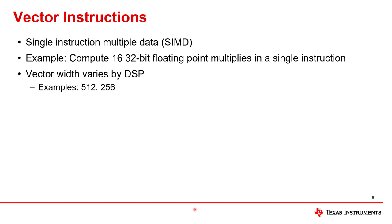Vector instructions are the primary way by which the C7000 supplies SIMD capability — Single Instruction, Multiple Data. That means a single instruction performs the same operation across many elements of data all at once. It's another level of parallelism, inside an instruction. An example is being able to compute 16 32-bit floating point multiplies in a single instruction. The vector width varies by the DSP; current examples are 512 bits and 256 bits.